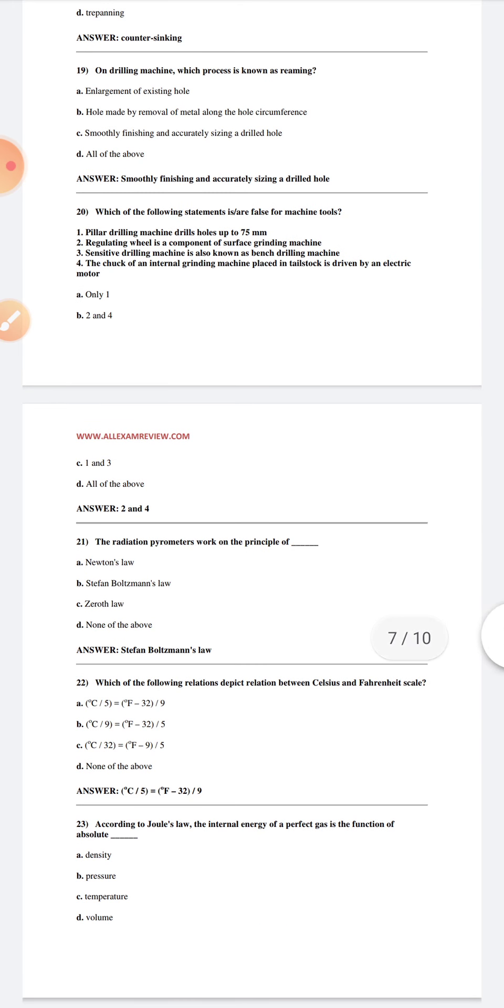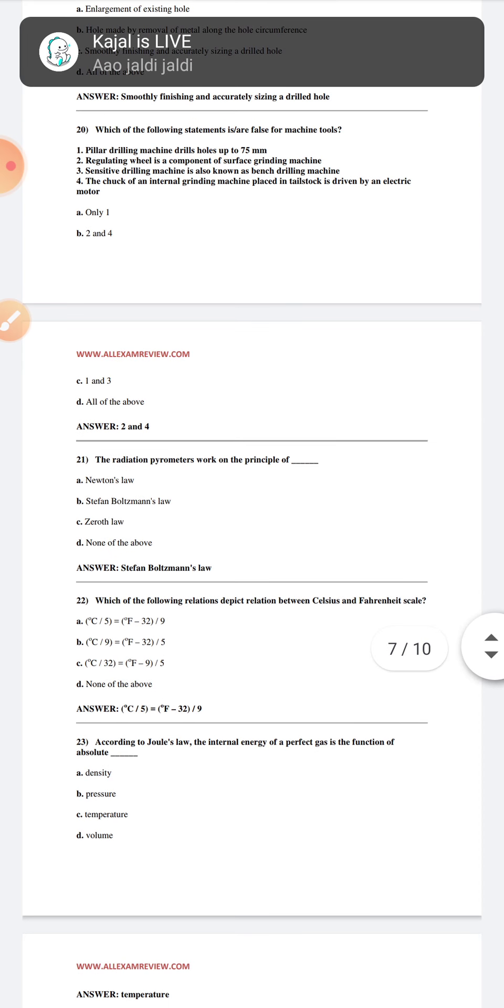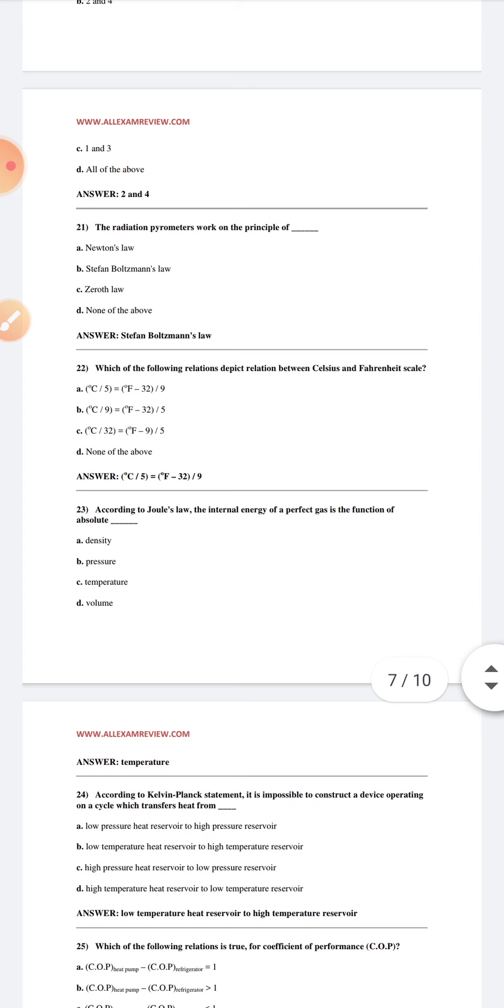The radiation pyrometer works on the principle of Stefan-Boltzmann law. Which of the following relations will depict a relation between the Celsius and Fahrenheit scale? C by 5 is equal to F minus 32 by 9. According to Joule's law, internal energy of a perfect gas is a function of absolute temperature.